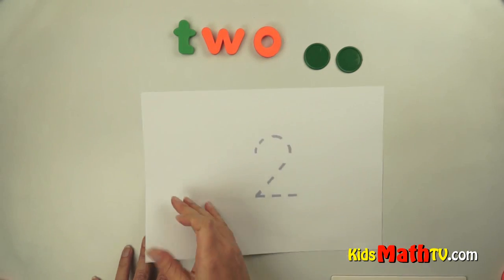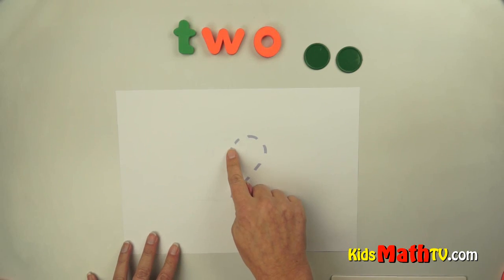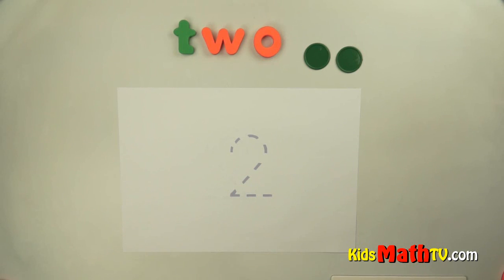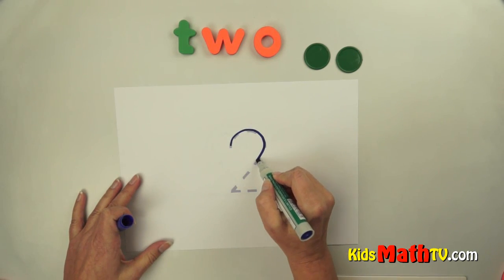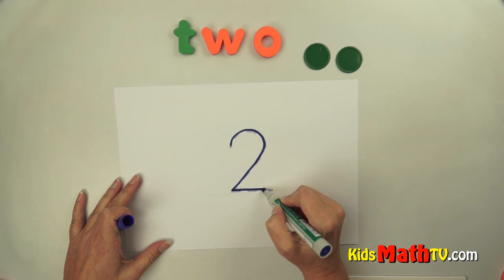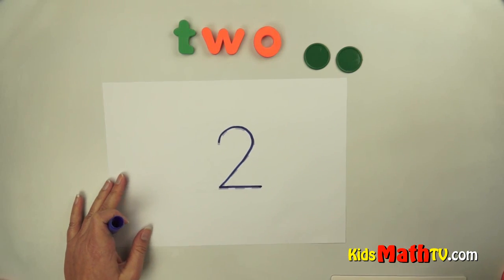Okay, let's try drawing the number two. I'm gonna trace again. Up and around, down, and across. Two. One, two. The number two.